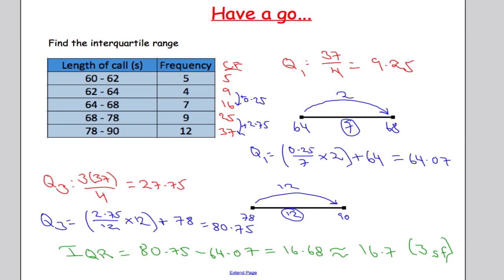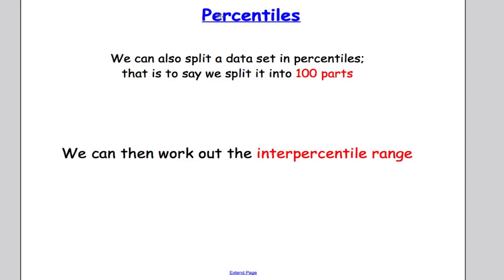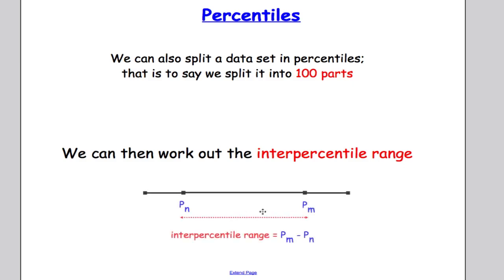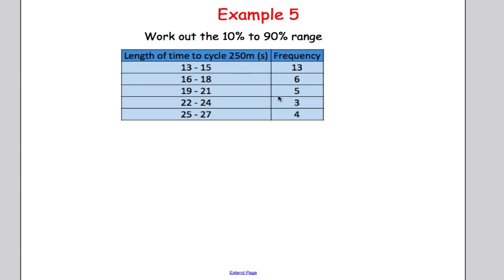On to percentiles now. With the interquartile range we broke down data sets into four equal parts — quartiles or quarters. With percentiles, we can split a data set into 100 parts, and use that to work out the interpercentile range — calculated as the nth percentile take away the nth percentile. It's not a whole lot different from what we've been doing already.